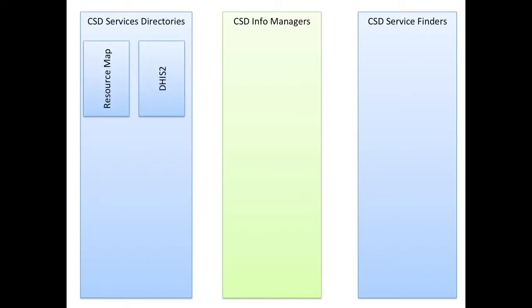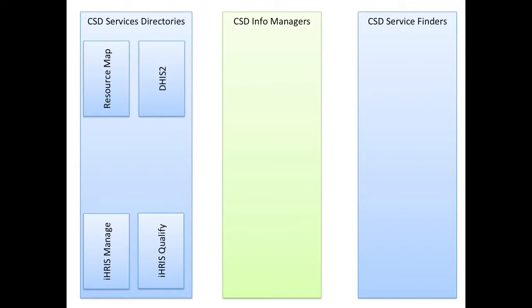At the recent IHE Connectathon, OpenAHIE had several service directories. The first two are ResourceMap and DHIS2, which had information about the health facilities and the health system. We also have IRIS, which had information about the health workers. IRIS Manage would have information about the deployment of the health workers, where they are posted to. IRIS Qualify would have information about the license and registration and certification for health workers.